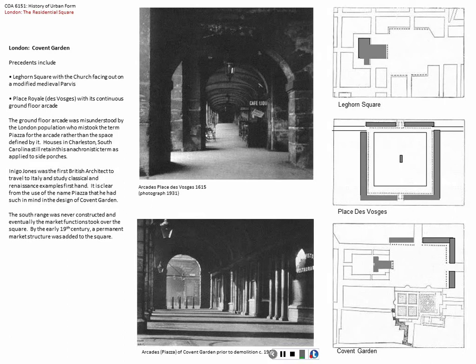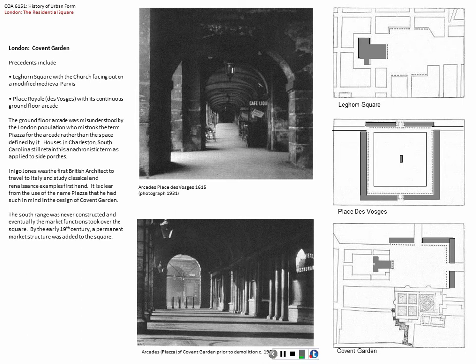Jones was the first British architect to travel to Italy, but the British got confused. One thing for sure, Mediterranean cuisine never made it across the channel until very recently. But the British got confused and rather than calling the open square the piazza and this the arcade, they called the arcade the piazza. And as I mentioned earlier, if you go down to Charleston, South Carolina today, people still call a portico a piazza.